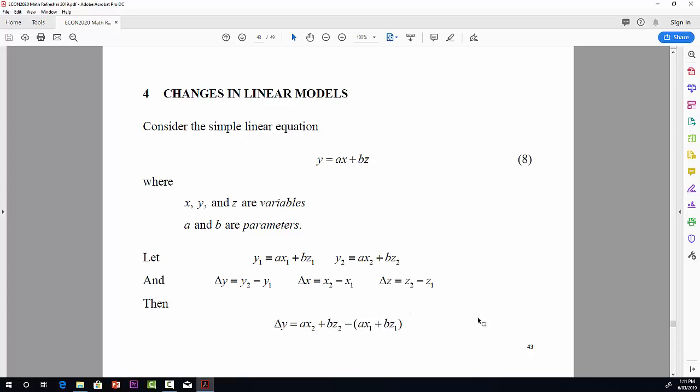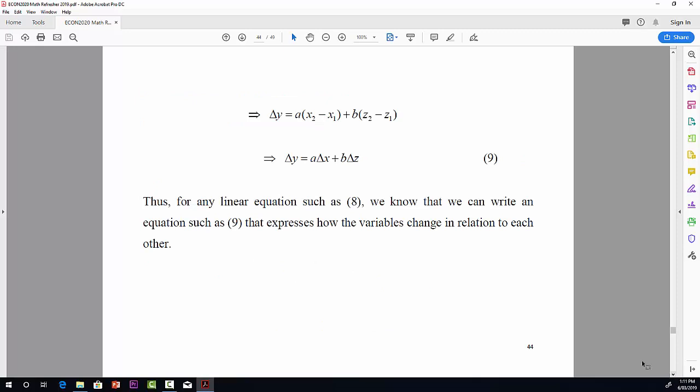Now, just collecting terms, same equation, just factoring out the a. So we've got a times now x2 minus x1 plus b times z2 minus z1. Now, you'll see that x2 minus x1 is, of course, our old friend delta x, or change in x. And similarly, z2 minus z1 is change in z. So this brings us to really the result that I'm after here. Change in y is equal to a times change in x plus b times change in z.